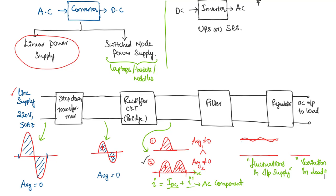The final output from the regulator is a constant DC voltage supplied to the load. As we move forward, we will first discuss rectifiers — including the transformer, since they are integral parts and will be dealt with together. The first case, where only the positive half cycle is present, is called a half-wave rectifier; the second case is called a full-wave rectifier. We will discuss these in detail with parameters and derivations, then move on to filters, and then regulators.